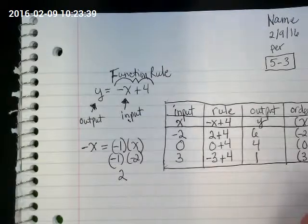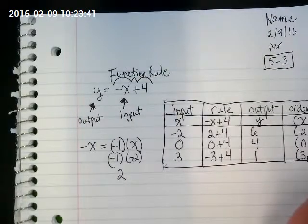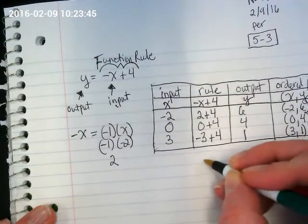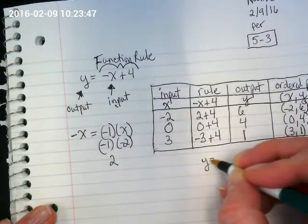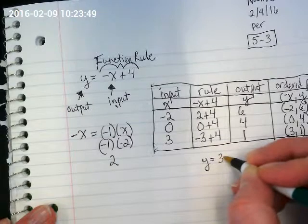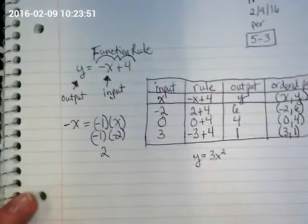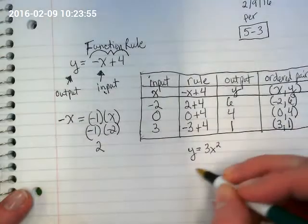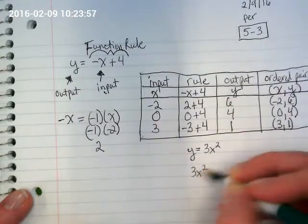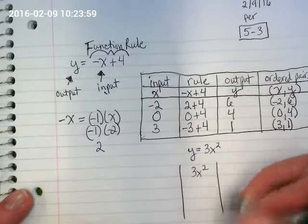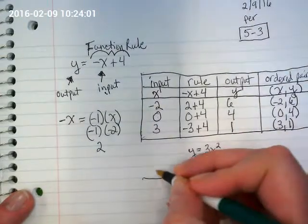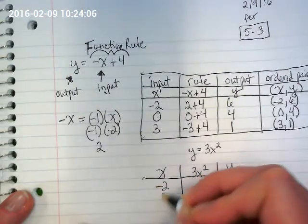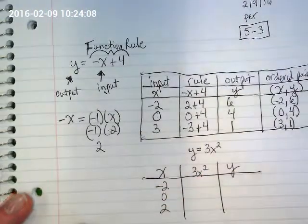Before I set you guys off to do some work on this, I want to go over a question I had. And if you have an equation like y is equal to 3x squared. And I'm going to put that 3x squared as my rule into a table. And I'm going to have my x and I'm going to have my y. I'm going to try negative 2, 0, and 2.